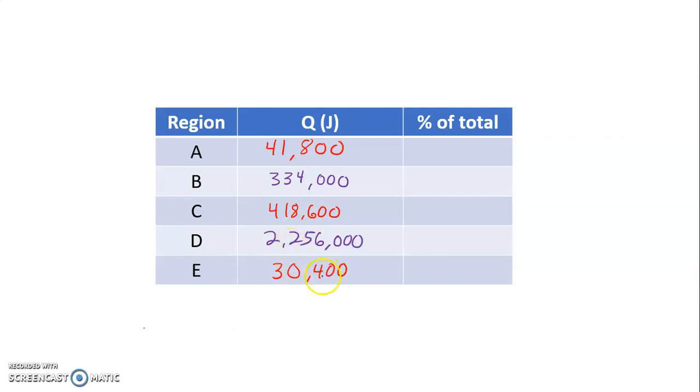2,256,000 joules for D, 30,400 joules for E, and that gives us a total of 3,080,800 joules.